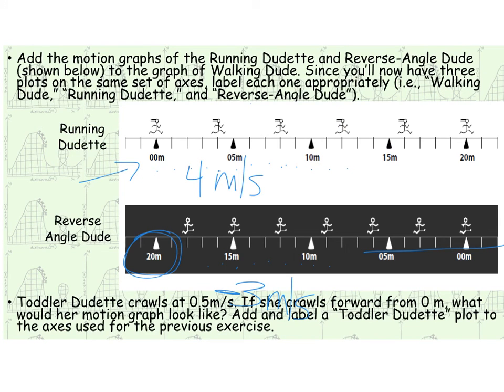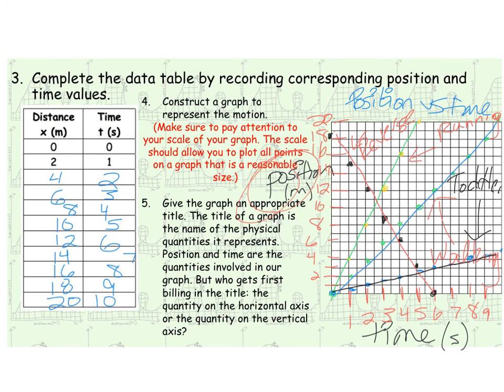Now let's look at the very bottom here. Here it starts talking to us about toddler dudette who crawls at 0.5 meters per second. She's going to crawl forward from 0 meters, and we want to look at her motion graph. So I went ahead and added toddler dude down here. So it's the black line with the blue dots you see going here. Tried to draw you a little arrow, but I know it's all jumped up together. But hopefully you see the little toddler moves very slow. Walking dude's normal, and then the one with the steepest slope, that's going to be our running dudette. They're all traveling in the same direction, which is forward. Then you have reverse angle dude who is starting away from them and moving towards them.